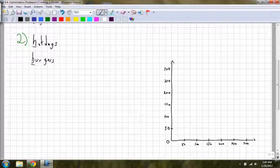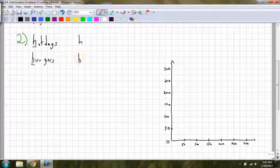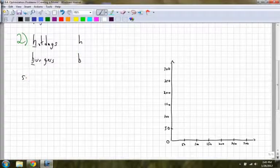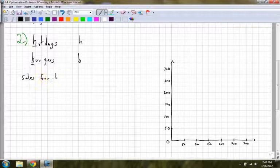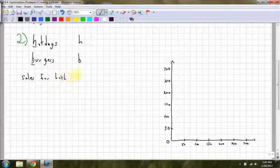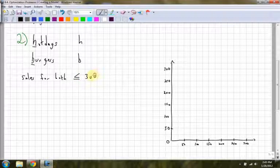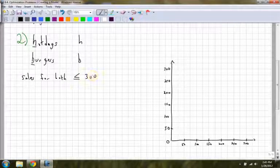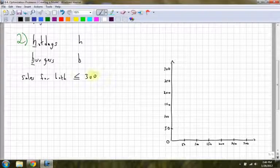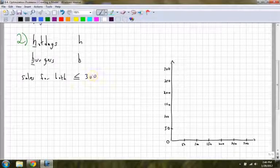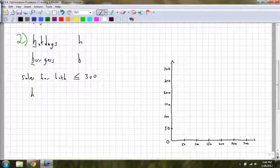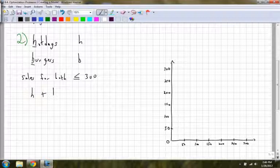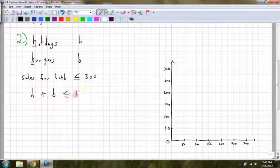First thing you have to do is figure out what variable am I going to use for each. So I have h and b. First thing it says, daily sales can be as high as $300 for both. That means less than or equal to $300. But what does that mean in terms of an equation? Sales for both of them means both of them combined. It doesn't mean I'm going to multiply them, it means I'm actually going to add them. So if I sell a certain number of hot dogs and a certain number of burgers, it has to be less than or equal to $300.